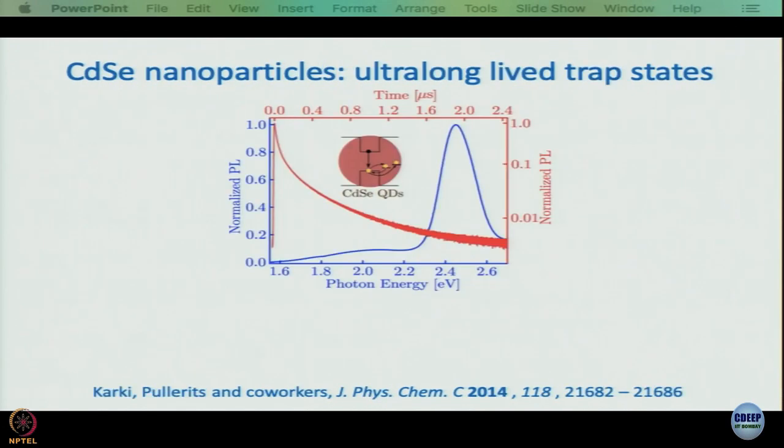Very often you have ultra-long-lived trap states, though not always. You can try to make nanoparticles where these trap states are almost absent. But in most cases, you have long-lived trap states, which is usually a hindrance because they steal from the bandgap emission intensity. However, in some cases trap state emission has been used effectively to make white light emitting nanoparticles or red emitting nanoparticles, which have different applications.